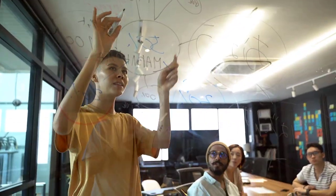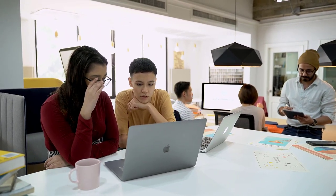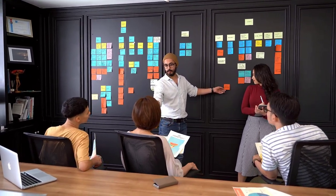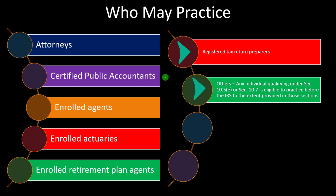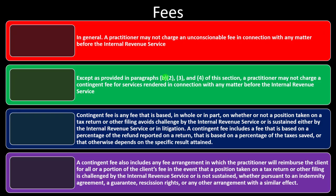Specialization is often a good thing. Attorneys, for example, can have problems because their ability to do things is so broad that it's hard to decide where to specialize — do they want to be in the tax area, and what kind of tax area? Same with CPAs — they often have a really broad area they could work in, which can stop them from specializing. Specialization would often be good because it allows you to focus your attention, do a better job, and often make more money in a specific area. Registered tax return preparers and others — any individual qualified under Section 10.5E or Section 10.7 is eligible to practice before the IRS to the extent provided in those sections. Government officers and employees and state officers and employees may also qualify in some instances.